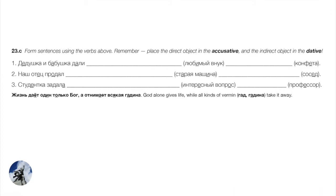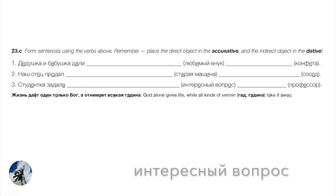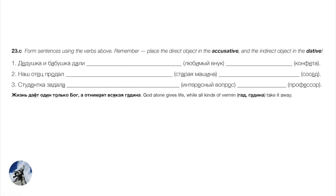Number three: the female student posed an interesting question to the professor. Professor is the only thing that makes sense in the dative: Студентка задала интересный вопрос профессору. Here's a nice пословица: Жизнь даёт один только Бог, а отнимает всякое гадина — God alone gives life, and all kinds of vermin take it away. Here один means 'alone': God alone gives life, and all kinds of filth take it away.